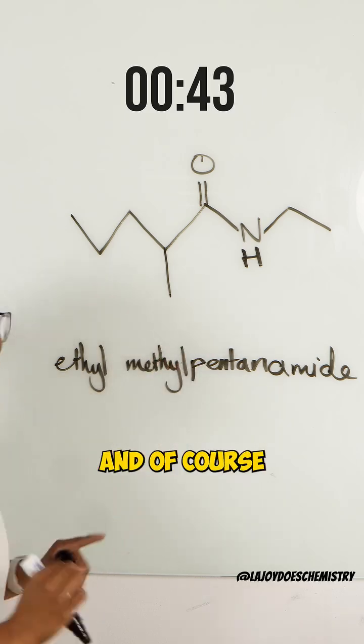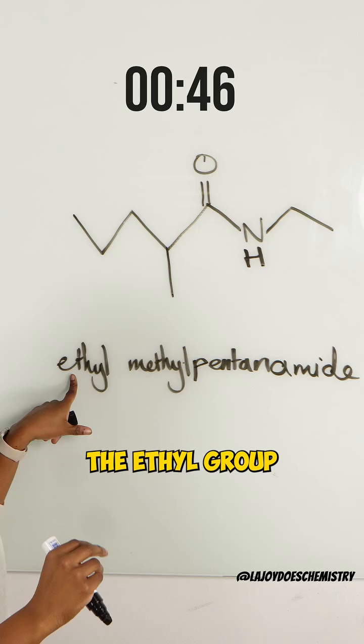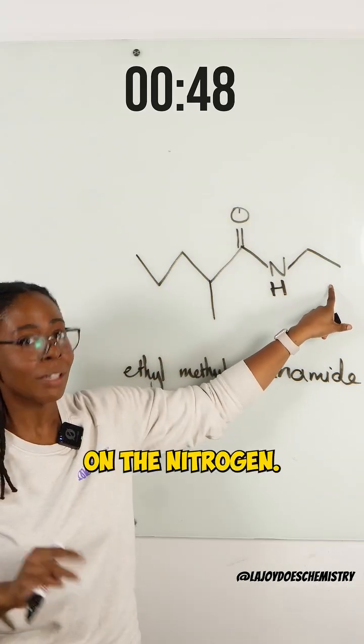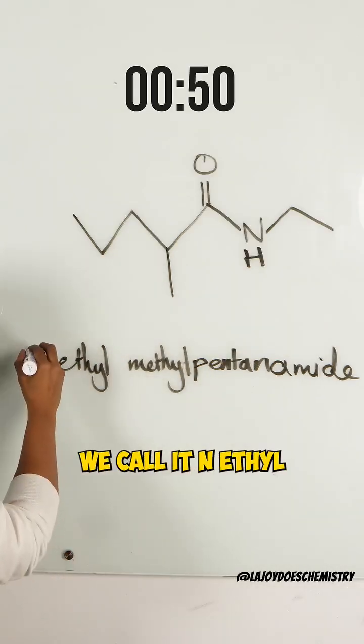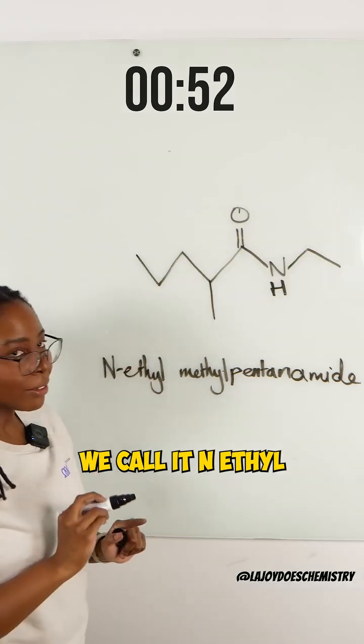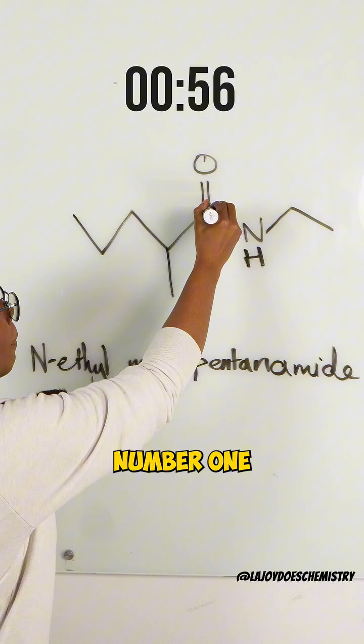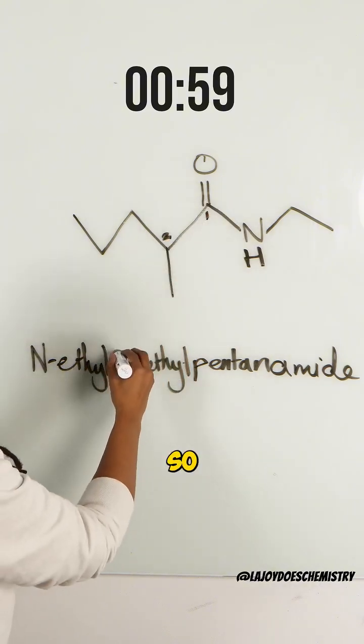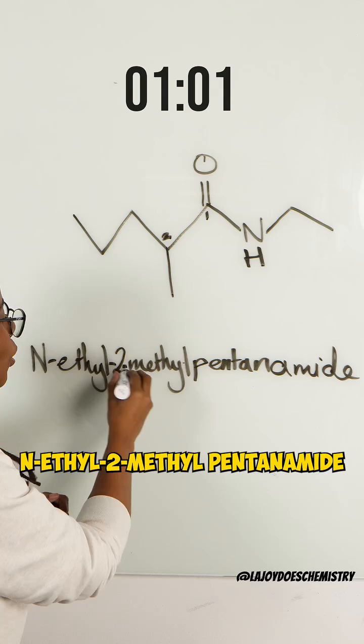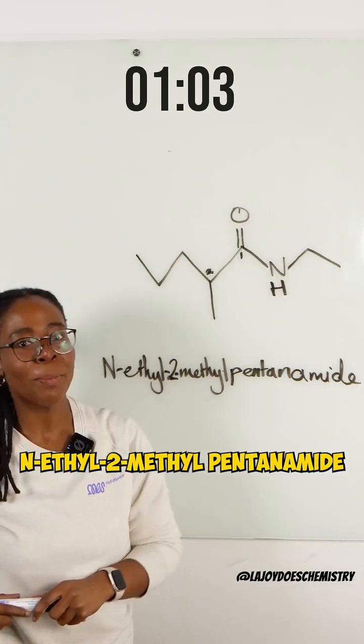Methyl pentanamide. And of course, we need to position them. The ethyl group is on the nitrogen, so we don't give it a number - we call it N-ethyl. The methyl group - we start with this as carbon number one, making this carbon two - so N-ethyl-2-methyl pentanamide.